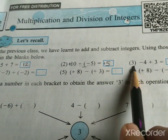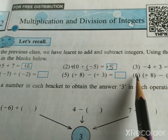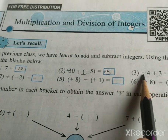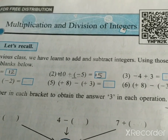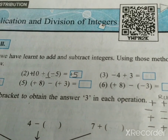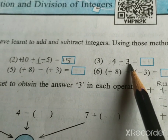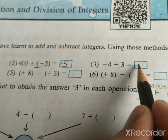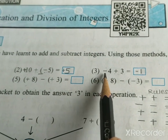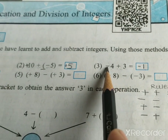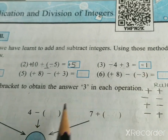Third example: minus 4 plus 3. In this question, the symbols are minus and plus, so we get a negative symbol. Minus 4 plus 3 is equal to minus 1. The bigger number is 4, and the symbol of this number is negative. Therefore, our answer is negative 1.